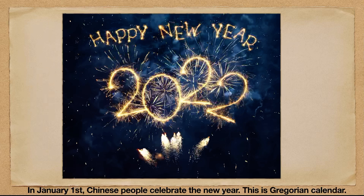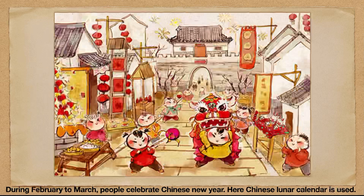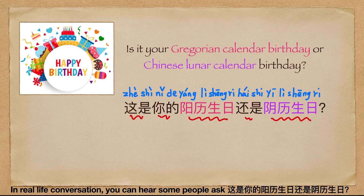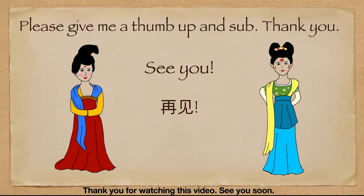For example, on January 1st, Chinese people celebrate New Year using the Gregorian calendar. Chinese lunar calendar is also used in daily life. In real life conversation, you can hear some people ask: 这是你的阳历生日还是阴历生日? — Is it your Gregorian calendar birthday or your Chinese lunar calendar birthday? Thank you for watching this video. See you soon.